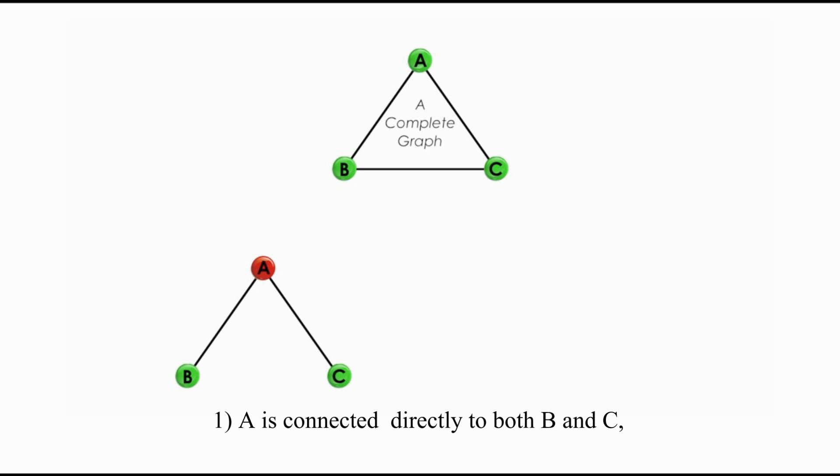1. A is connected directly to both B and C, and B and C are indirectly connected through A. A is a central point. All three points are connected, and no loop is formed.